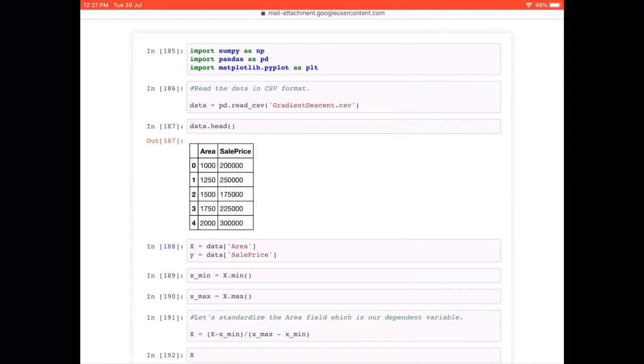Then what we are doing is we have stored the data in a data frame. And then we are using the head method, which gives the first five records. But then we only have five records in the first place. So this is just to check the data.